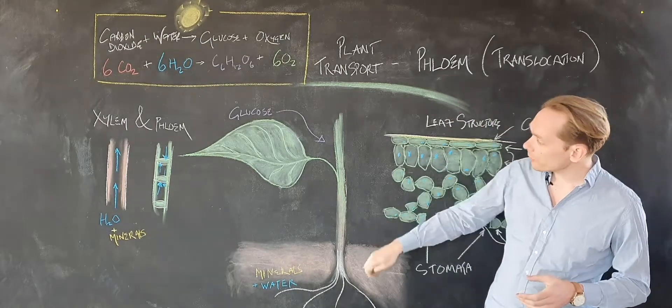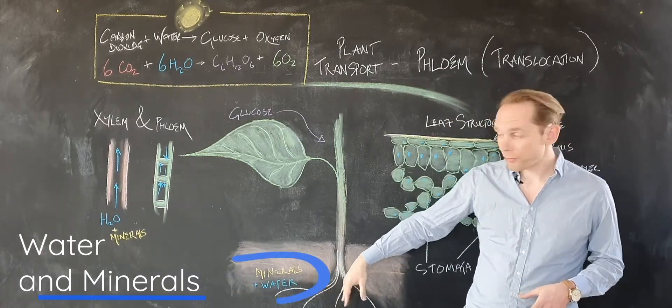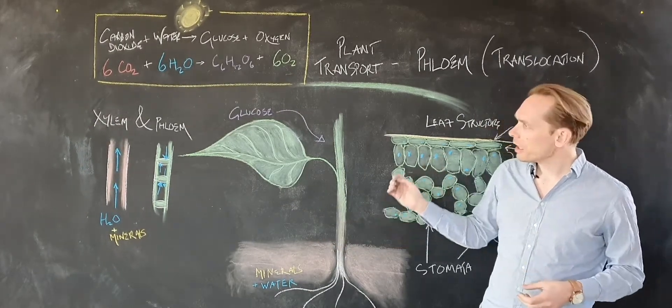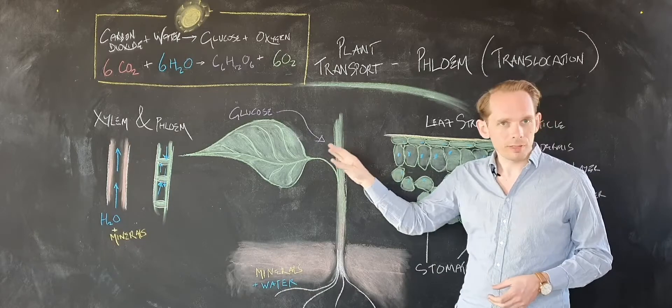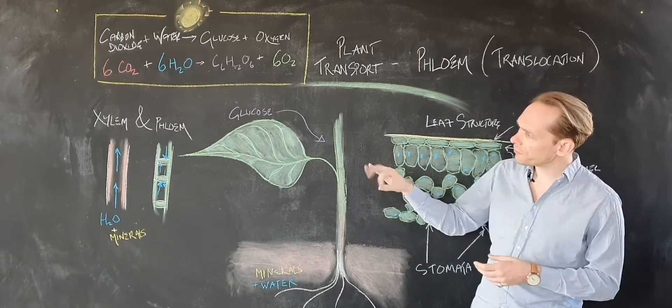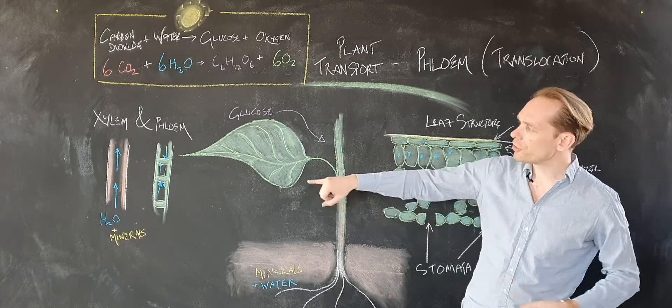So the water and minerals travel up through the plant through the xylem vessels, which are kind of dead, long elongated cells. They travel from the leaves to the rest of the plant through the phloem vessels, and those are specialized cells which form these tubes.